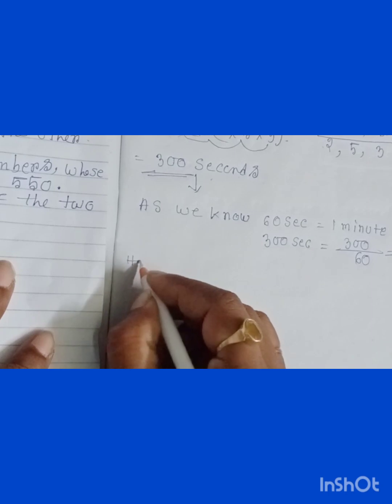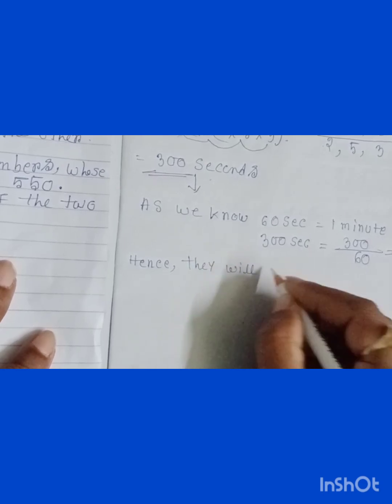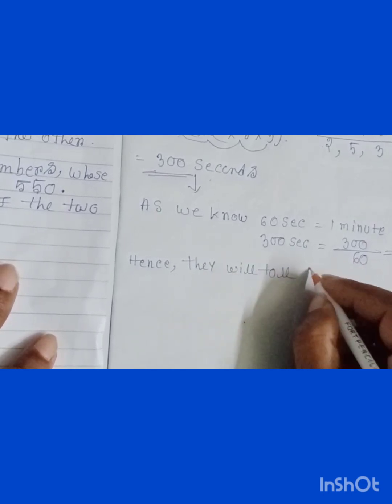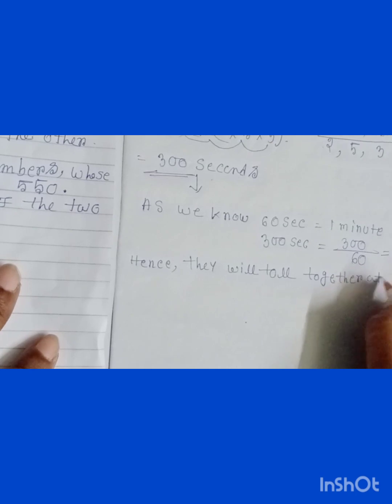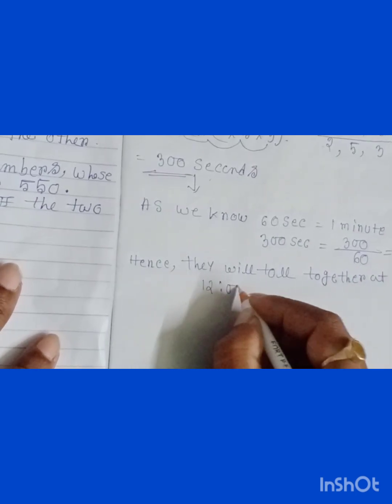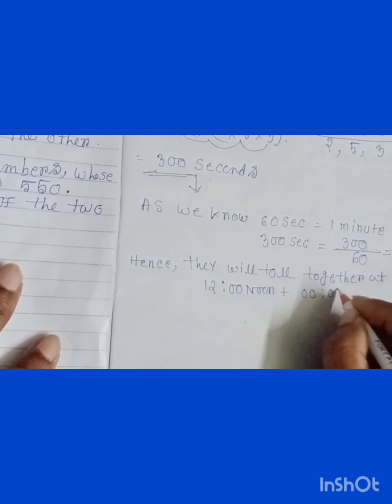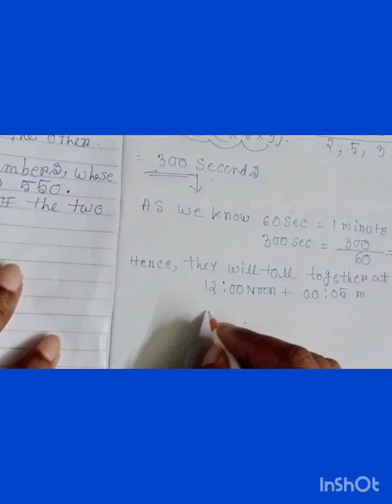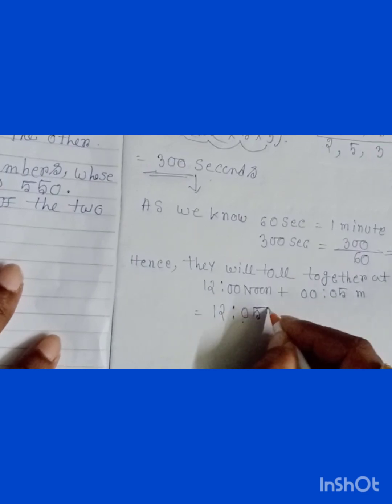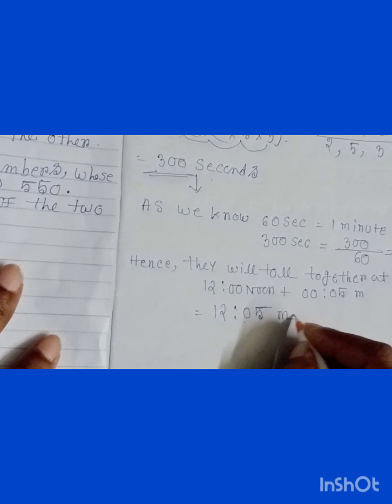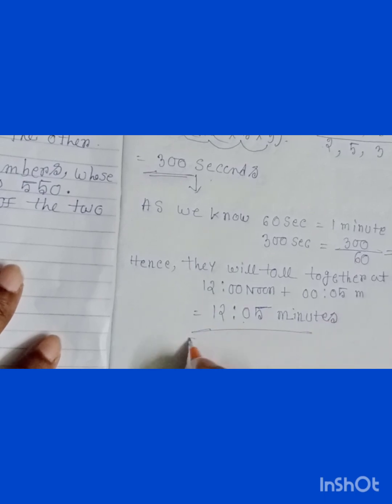Hence, they will toll together at 12 noon plus 5 minutes, that means 12:05. So this is the answer.